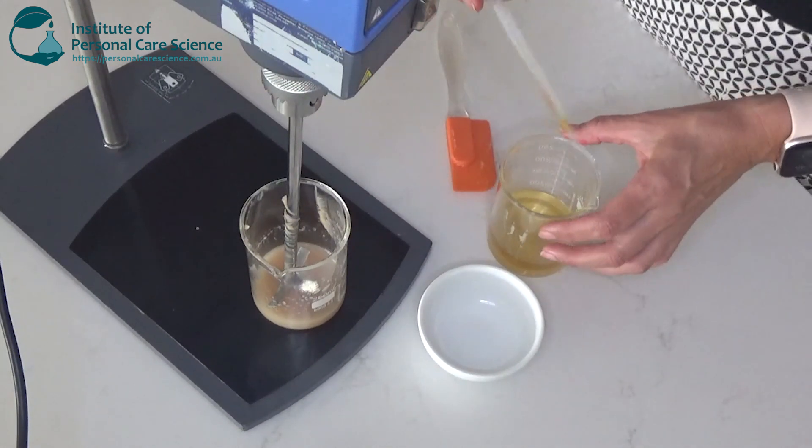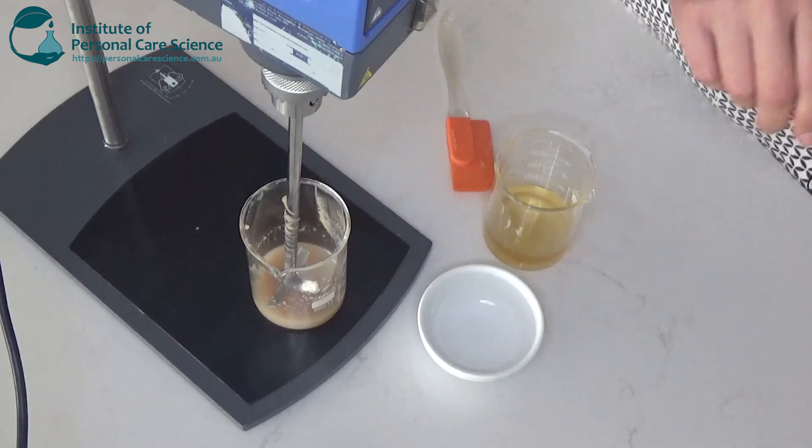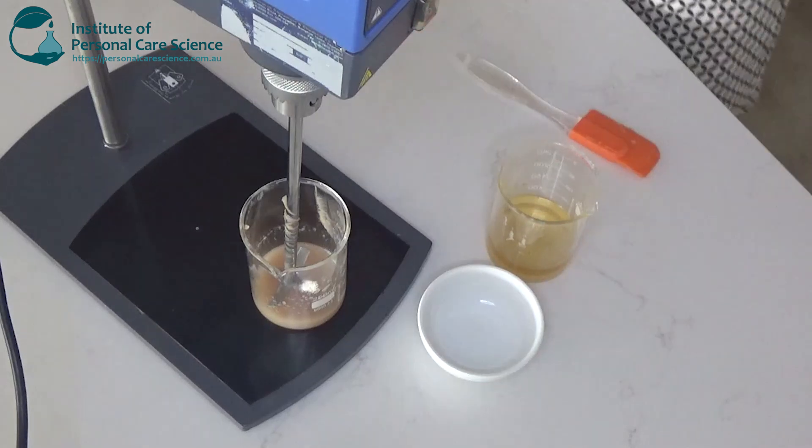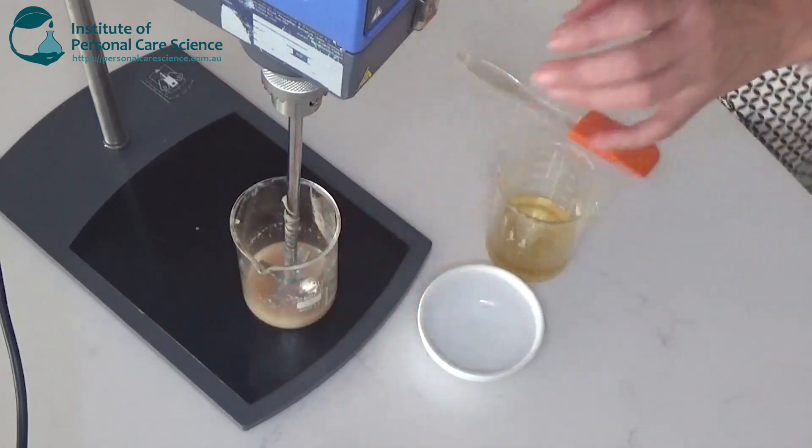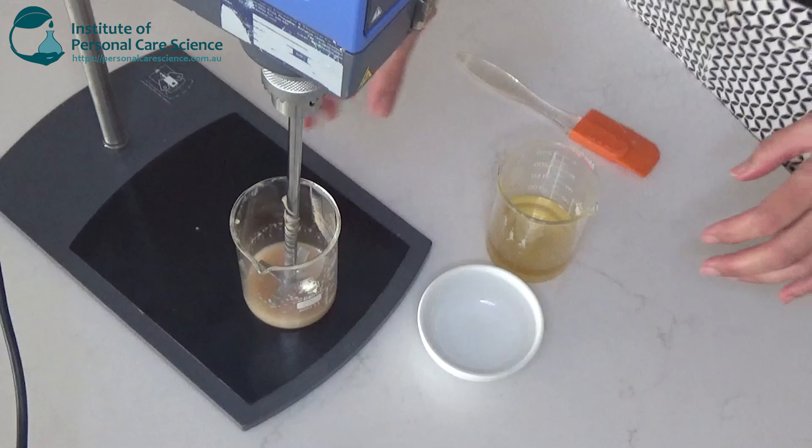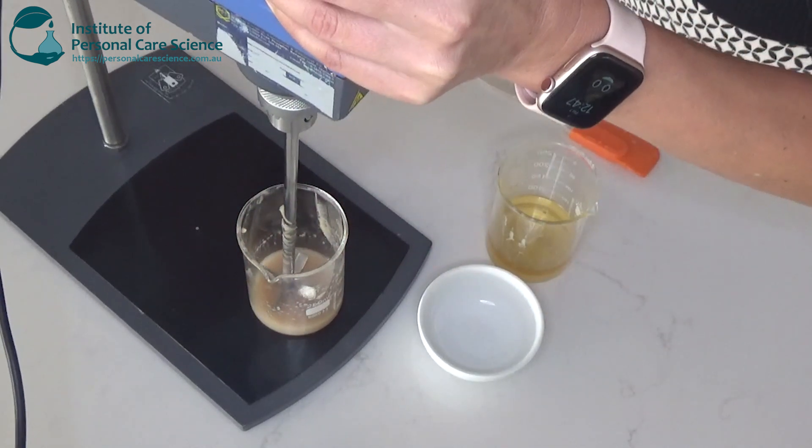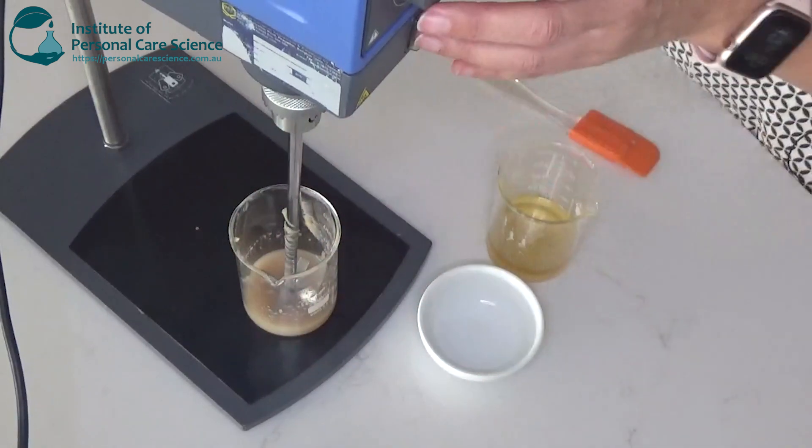And some preservative. I've used a natural one to stick with my natural theme. And we'll also pop in some vitamin E, some tocopherol to the oil phase there. Okay, now I'm going to add the water phase to the oil phase while it's on the mixer.